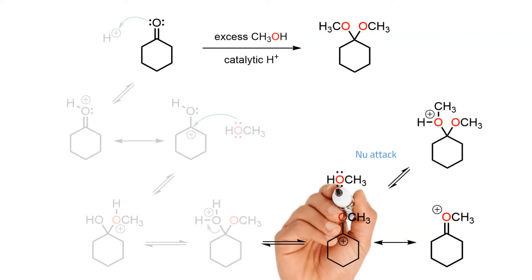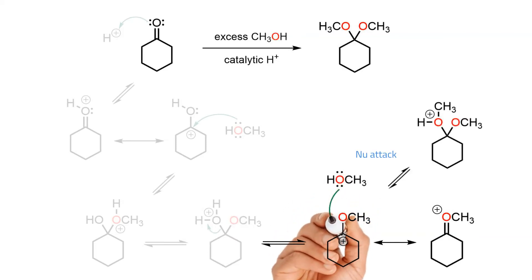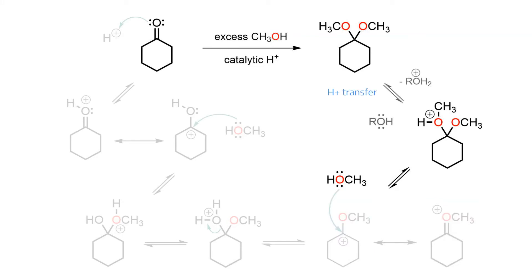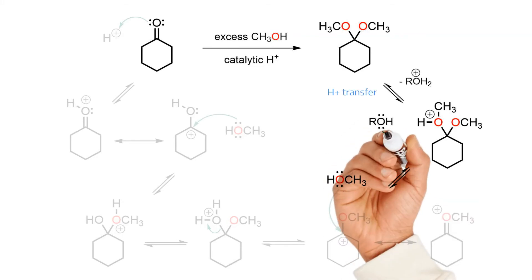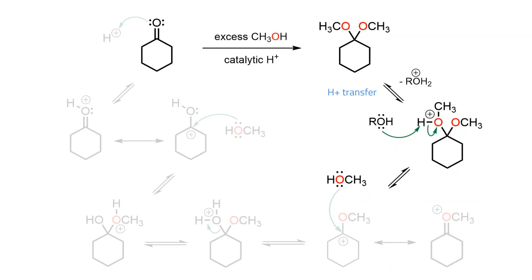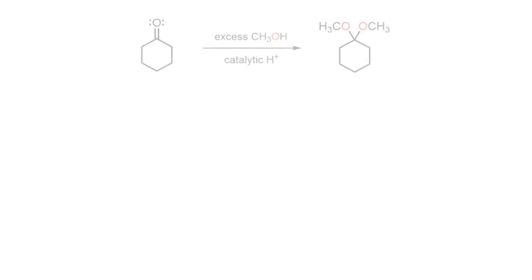Nucleophilic attack on the electrophile by alcohol solvent produces the conjugate acid of the acetal. Finally, proton transfer back to the solvent gives the acetal and also regenerates the acid catalyst. Overall, treatment of an aldehyde or ketone with an excess of an alcohol and an acid catalyst results in the formation of a base-stable but acid-sensitive acetal.